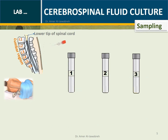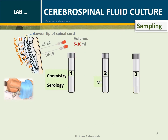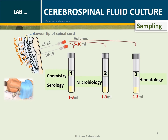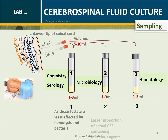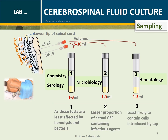CSF Sampling: Lumbar puncture into L3-4 or L4-5, taking a volume between 5 and 10 ml. Distribute equally into three tubes: Tube 1 for chemistry and serology, Tube 2 for microbiology, and Tube 3 for hematology. Tube 1 is least affected by hemolysis, Tube 2 largely contains the actual infectious agents, and Tube 3 has the least cells from a traumatic tap.